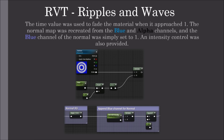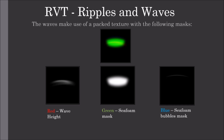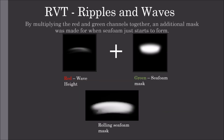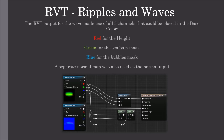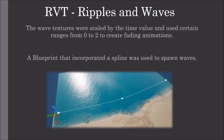An intensity control was also provided for this normal. The waves make use of a packed texture with the following channels: red as a height mask for the wave, green as a seafoam spawning mask, and blue as a seafoam bubbles mask. By multiplying the red and green channels together, an additional mask was made for when seafoam just starts to form — called a rolling seafoam mask. The Runtime Virtual Texture output for the wave used all three base color channels: red for height, green for the seafoam mask, and blue for the bubbles mask, with a separate normal map used as the normal input. Wave textures were scaled by the time value, using ranges from 0 to 2 to create fading animations.